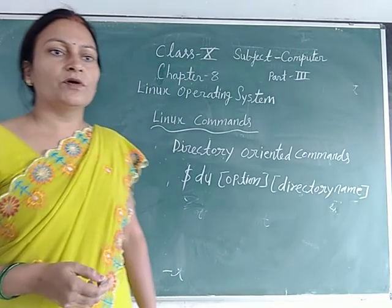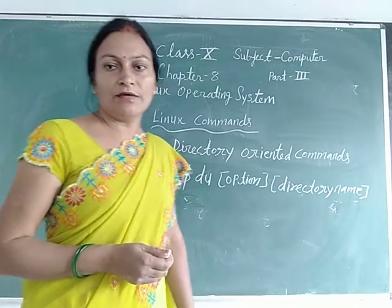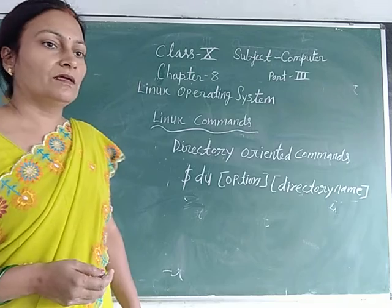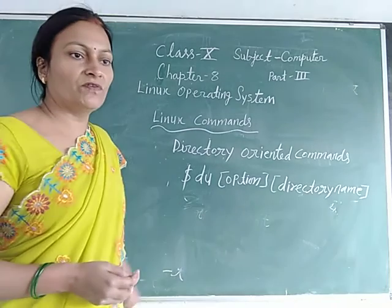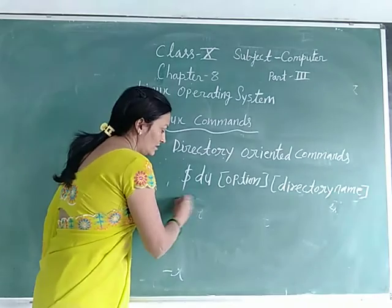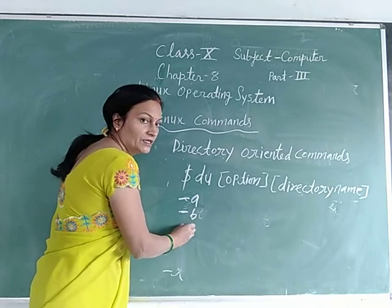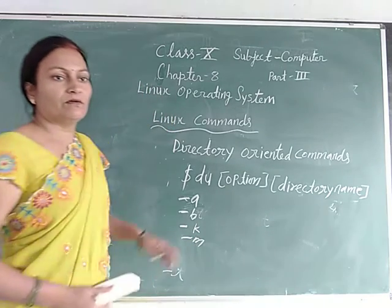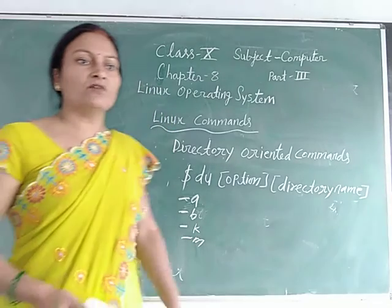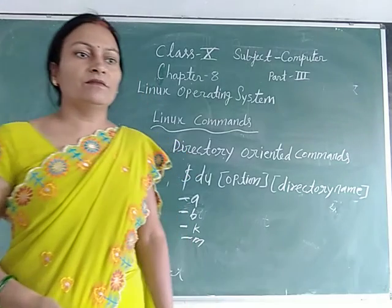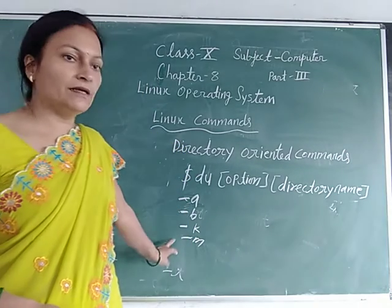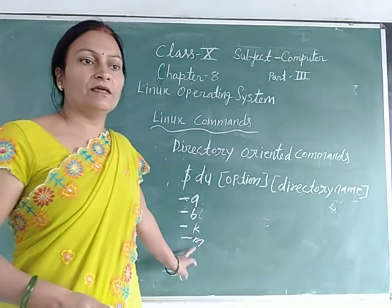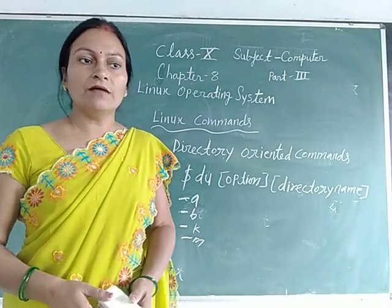The du command reports the disk space consumed by files in a specified directory. Different options are available: -a displays count for all files, -b displays size in bytes, -k displays size in kilobytes, and -m displays size in megabytes.